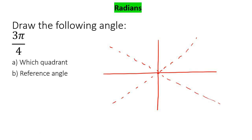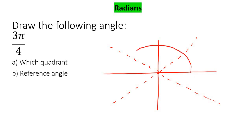To find 3π/4, you're just going to go 3 parts: 1, 2, 3. The reason I went this way and not the other way is because this angle is positive - there's no negative in the front. If it was negative, I would have gone the other way. Because it's positive, we go counterclockwise, then we draw in our angle line. We can get rid of all the dotted lines - they're just there to help you visualize where 3π/4 would go.